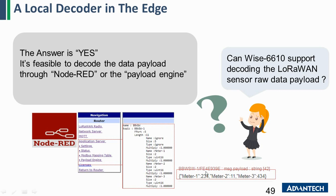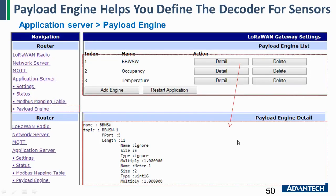For example, meter one with the data 23.4, meter two with 11, and meter three with 434. So let's see how it works. First, you go to the payload engine where you can create many payload engine rules for different sensors. The first one is an example — we use the BBWSW node as an example. The second one we can create an occupancy sensor, and also we can create a temperature sensor.